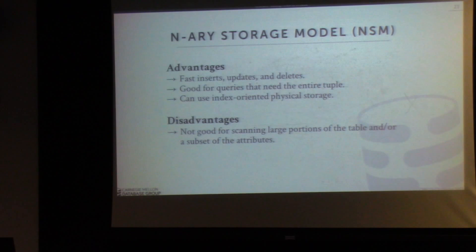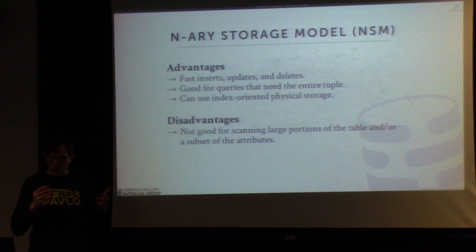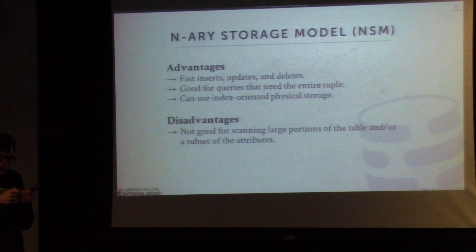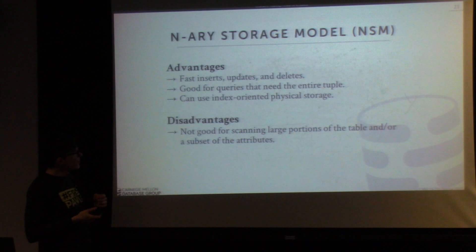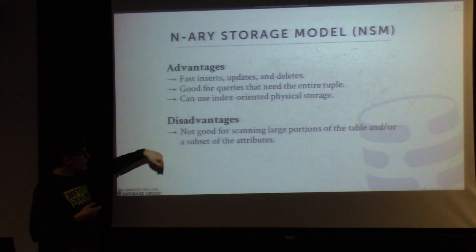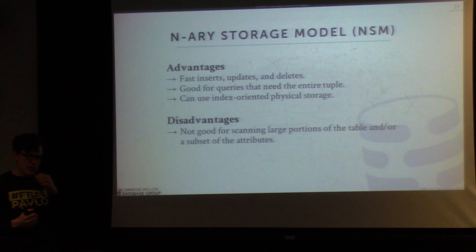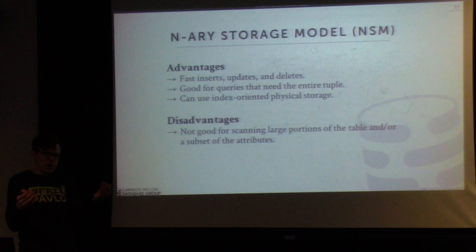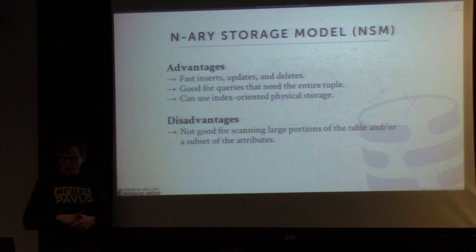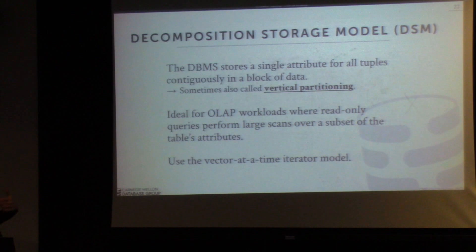The advantages of the NSM model — whether using index-organized or heap storage — are fast inserts, updates, and deletes, because you only modify data at a single memory address. Typically if your tuple is less than a cache line, you do a single fetch from memory to bring it into CPU caches. This is really good for queries needing the entire tuple. The downside is that NSM is really bad for OLAP queries scanning large portions of a table when you only need a subset of attributes — you bring all the other columns into your CPU caches, polluting them and wasting space.